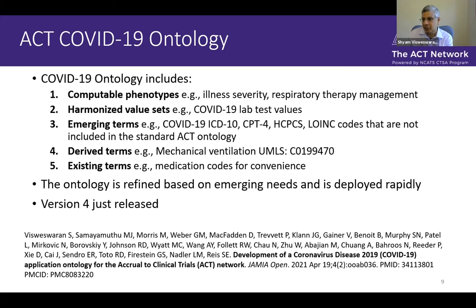The third was keeping track of emerging terms, which included looking up various terminology sites and pulling down new codes coming online. The fourth was derived terms — for example, we assigned a UMLS code for mechanical ventilation. Though mechanical ventilation has other codes, we added this UMLS code, which normally you wouldn't see in data, and I'll explain why. Finally, the fifth area is existing terms — terms already present in other parts of the ACT ontology that were pulled together into this COVID tree for convenience.